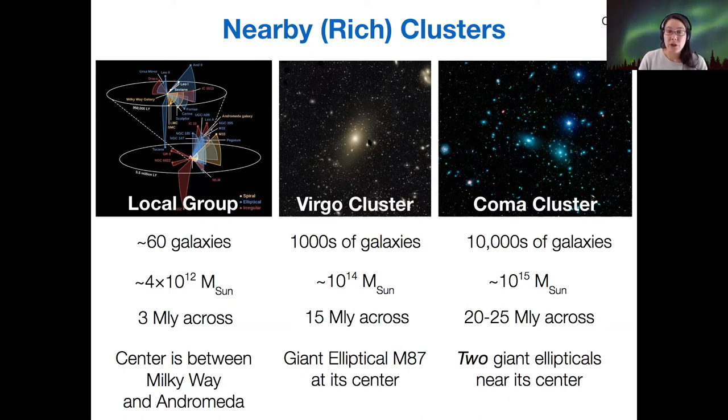For the Virgo cluster, there's just one giant elliptical that's dominating this image. For the Coma cluster, there are two giant ellipticals near the center. We've talked about galaxy evolution, merging creating ellipticals, and now you can see how that actually plays out within galaxy clusters—it creates these big giant ellipticals at the centers of clusters.